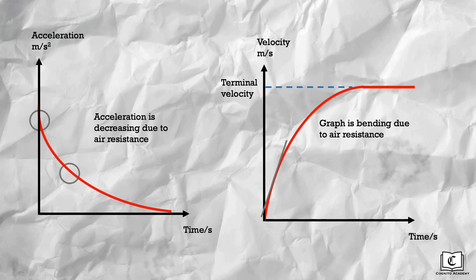Over time, acceleration decreases, meaning our gradient becomes less steep. And when acceleration reaches zero, our gradient is effectively zero.